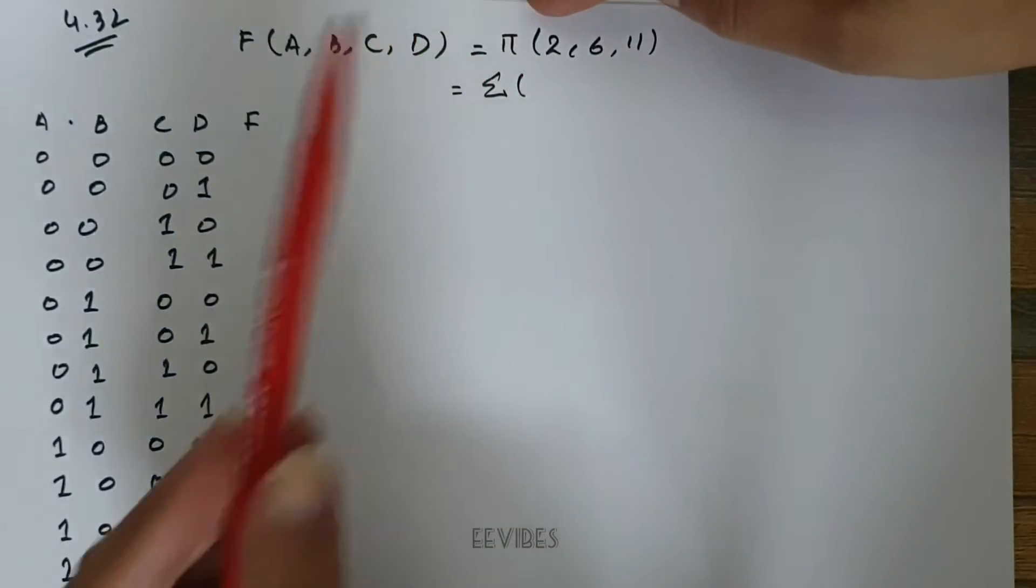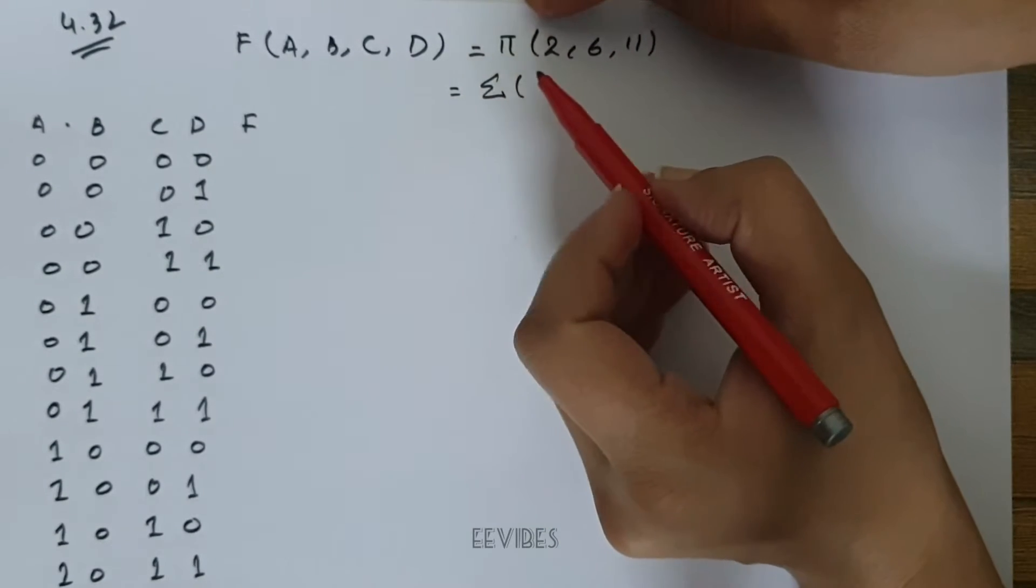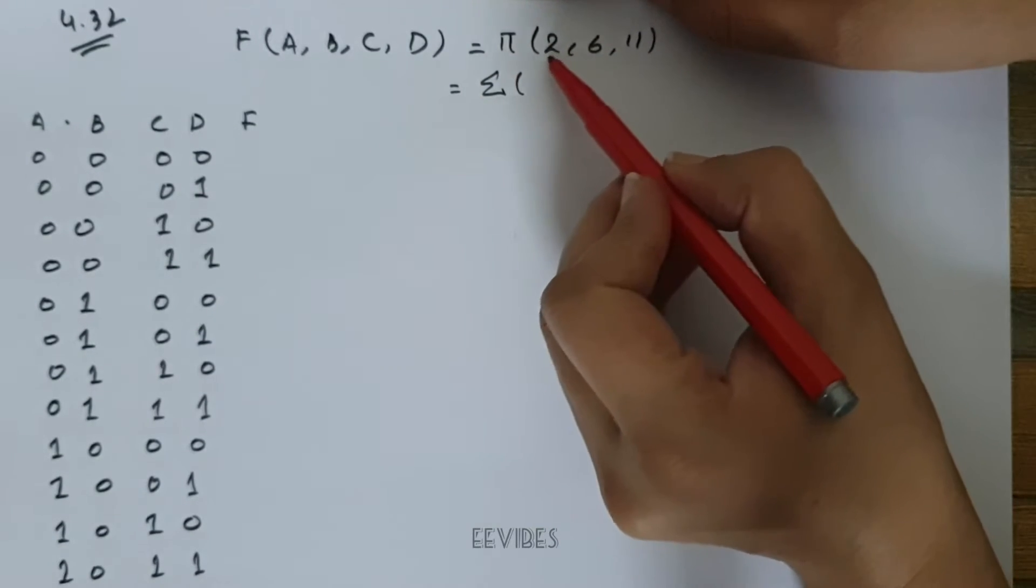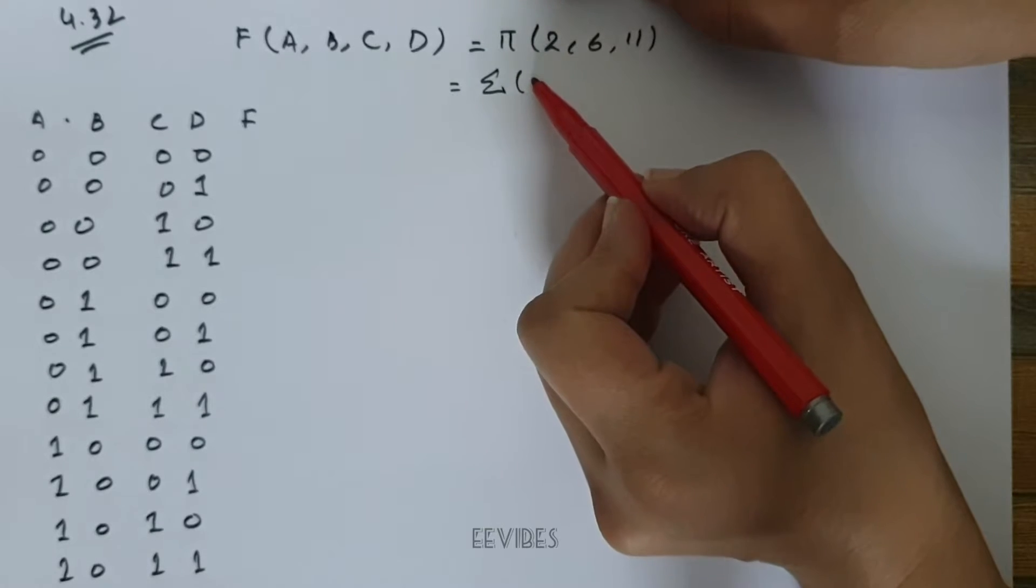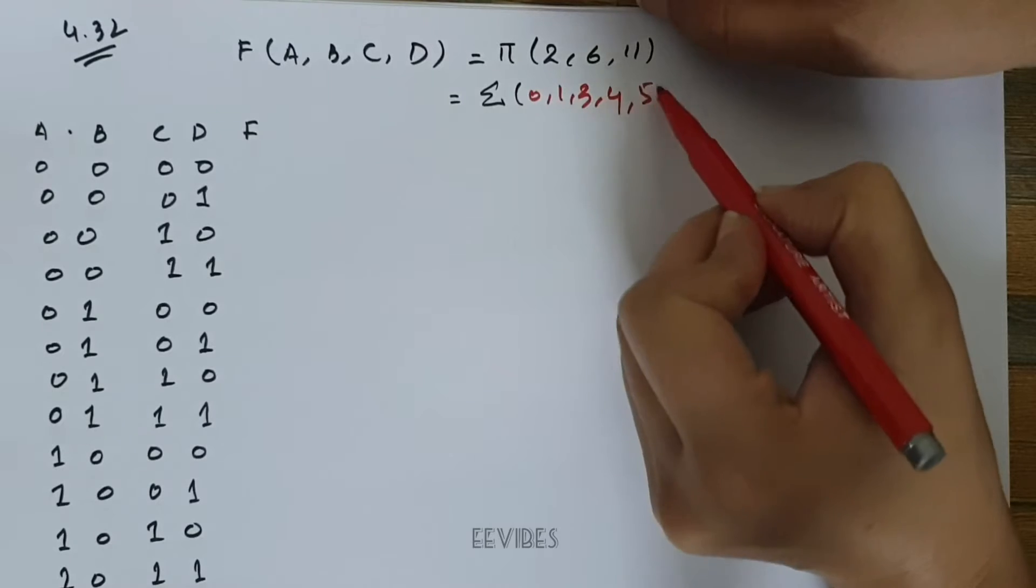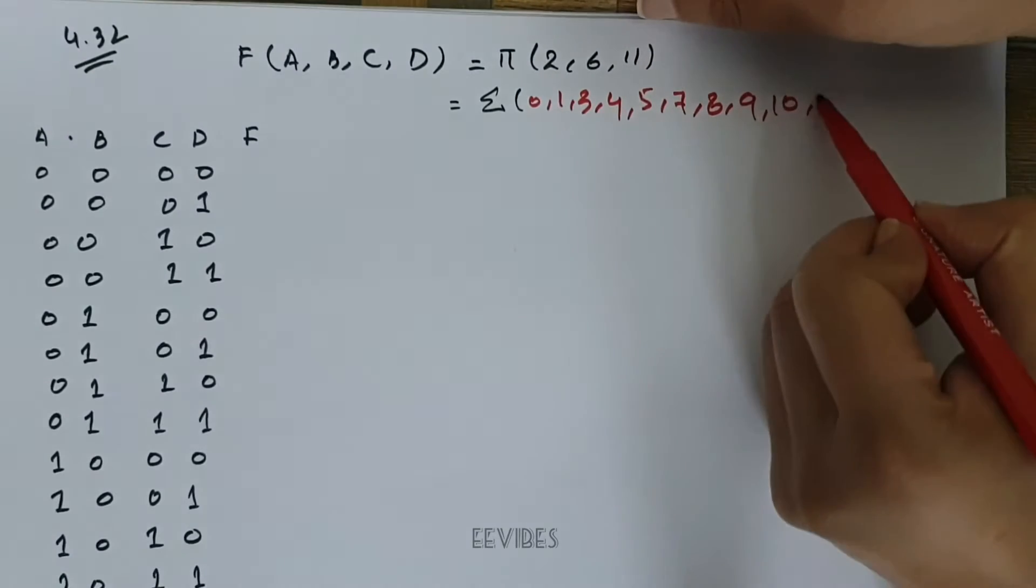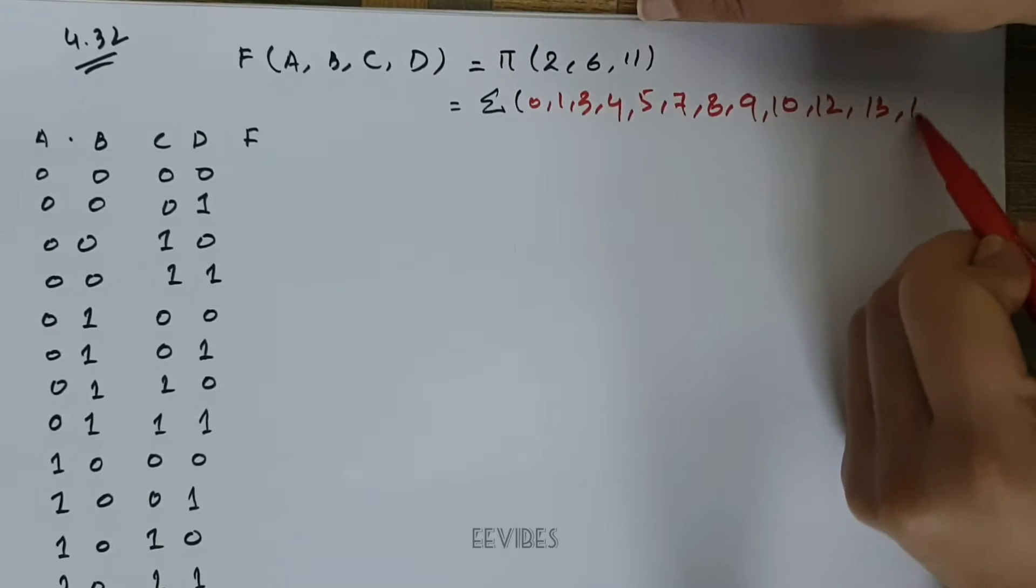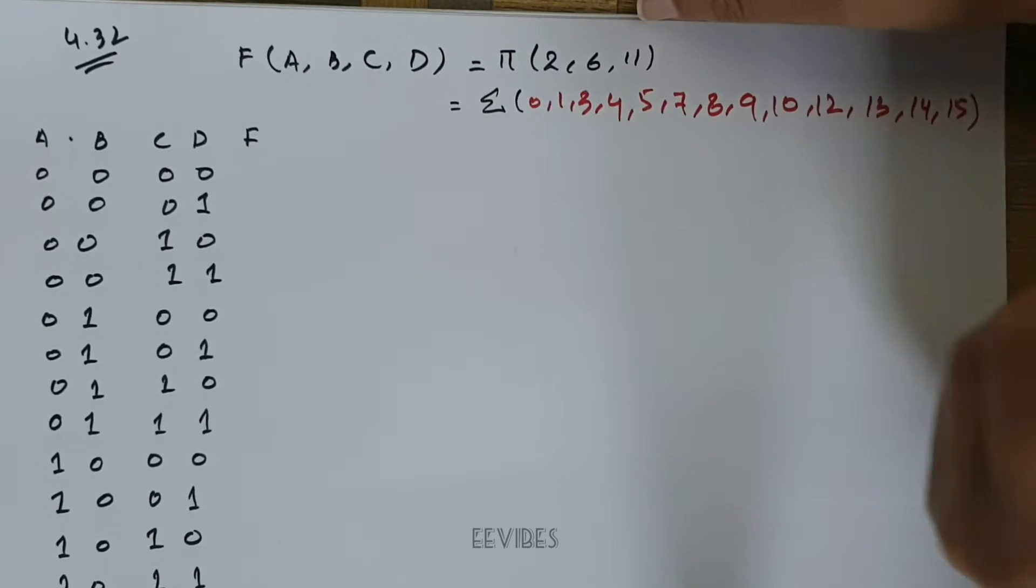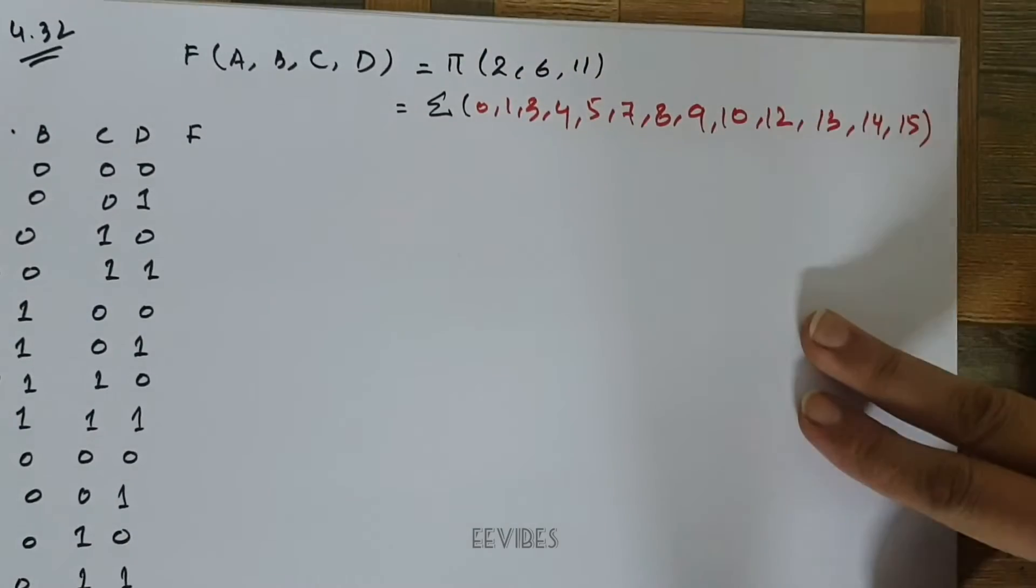As the product of the max terms, in order to represent the function as the summation of its minterms, we will be writing down those minterms that are missing in this expression. So minterm 0, 1, 3, 4, 5, 7, 8, 9, 10, 12, 13, 14, and 15 are actually those minterms where the function